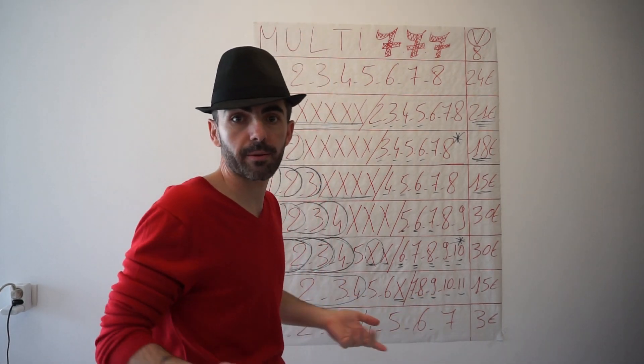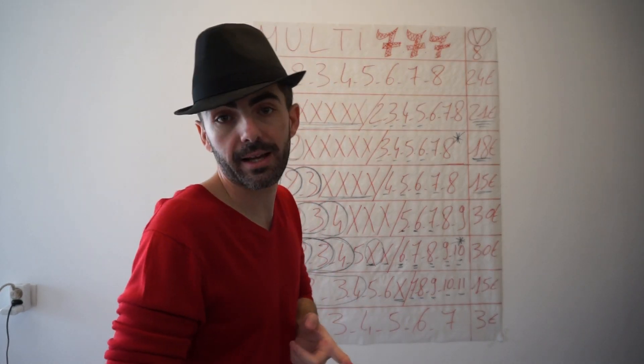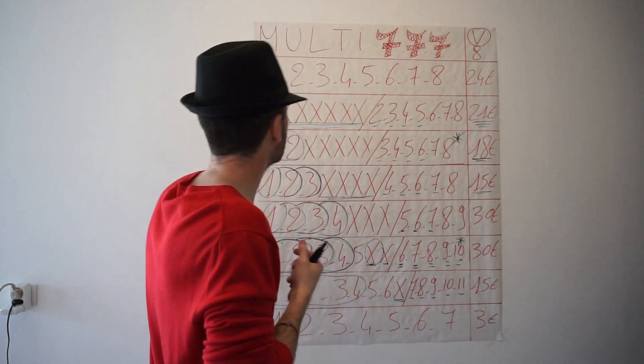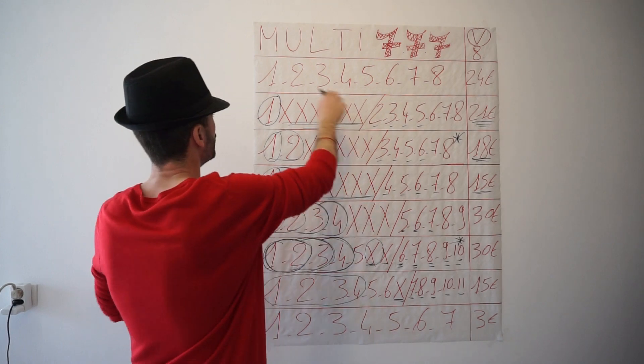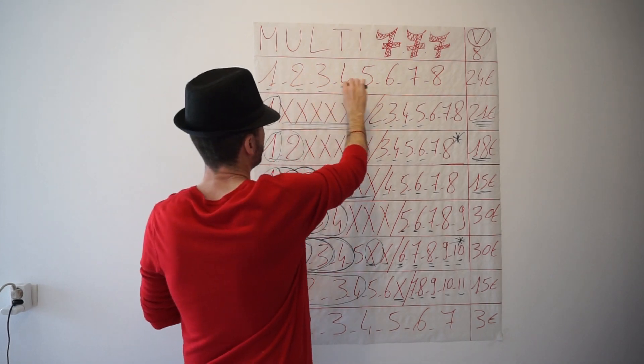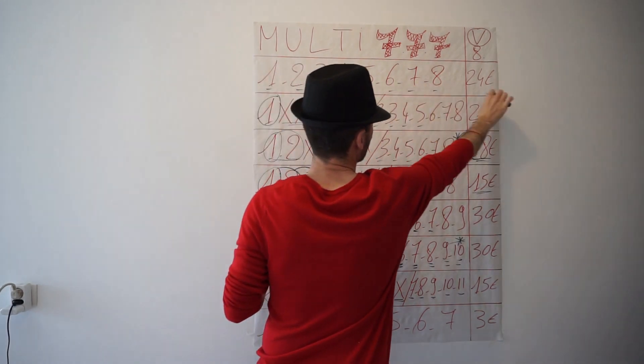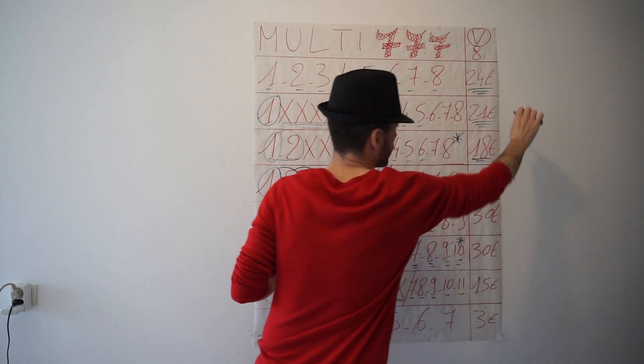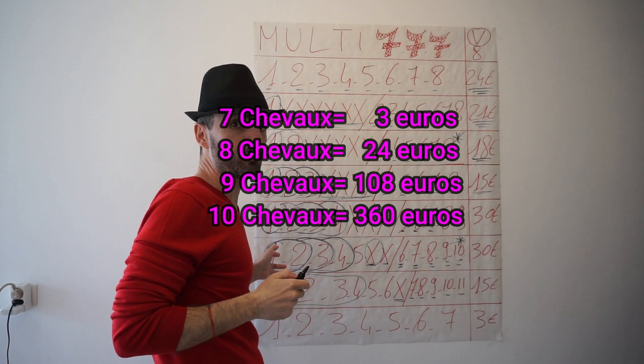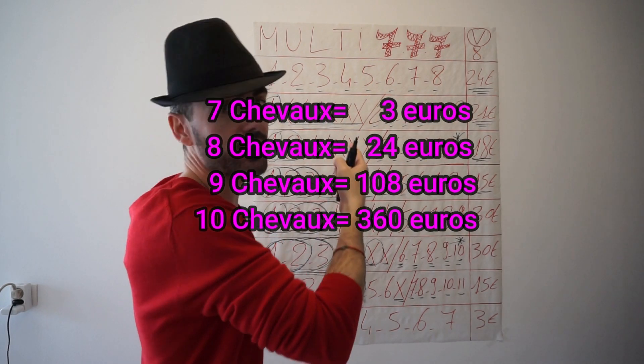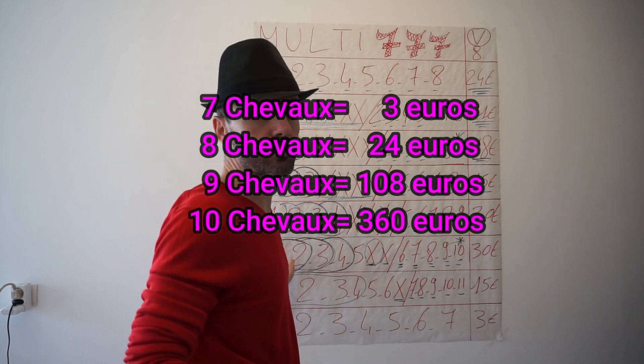Ça serait bien que le multi fasse au moins cinq euros pour qu'on récupère la mise de départ. Les multis toujours, je le répète, en multi plein 50% ou 25%. Et nous finissons donc la série des multi, le 26e jeu, le multi qu'on dit toujours à plat. Vous voyez, 8 chevaux, 24 euros. Donc je vous mets toujours plus on rajoute de chevaux, plus ça coûte cher.